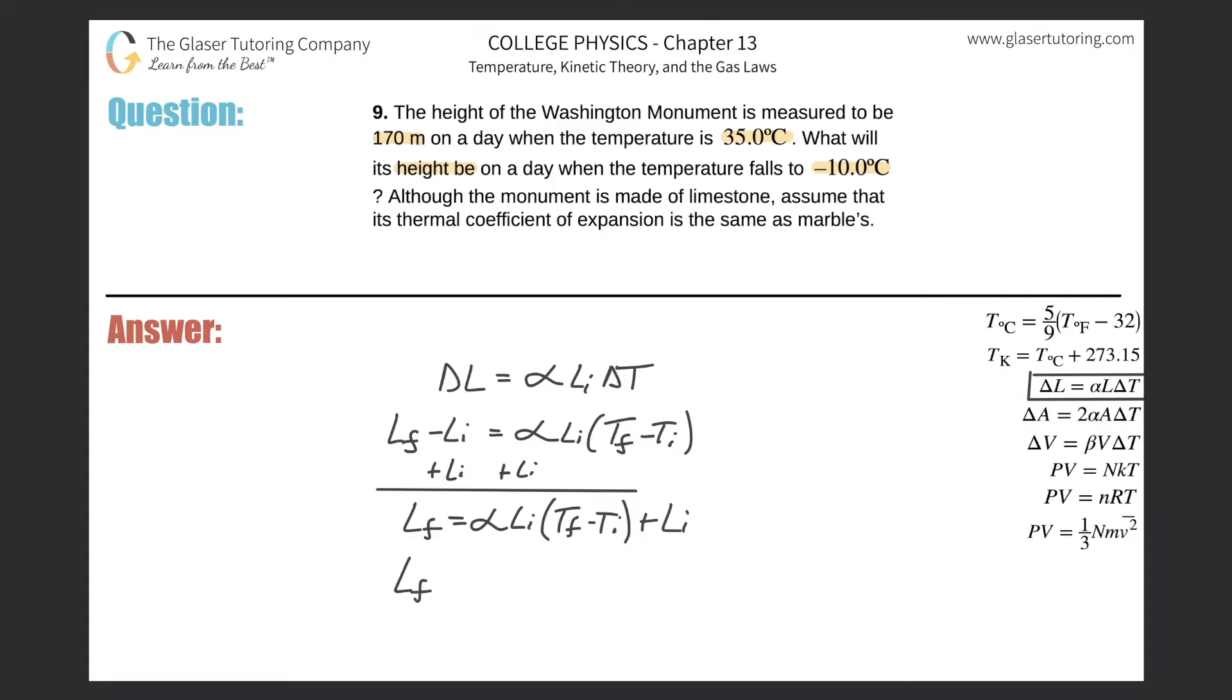So the final length will be equal to the coefficient of thermal expansion for marble, which is about 7 times 10 to the minus 6—you can look that up. The initial length was 170. They told us the final temperature is going to be negative 10 degrees minus the initial, which is positive 35. And then plus the initial length of 170.